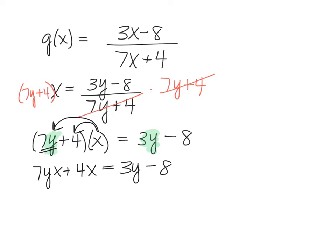At this point, I like to count how many terms I have all together. So if I count terms, I have 7yx, that's one term, then 4x is a second term, 3y is its own term, and then the minus 8 is a fourth term. The reason why I like to count how many terms I have is because then I can keep track of which terms have a y in it.